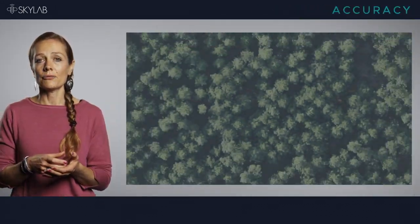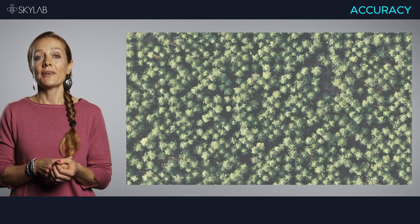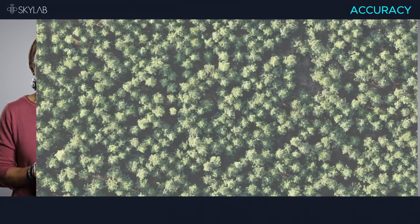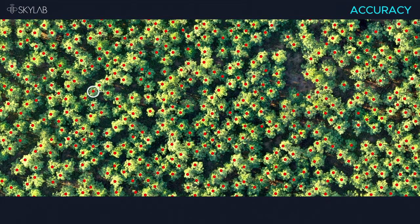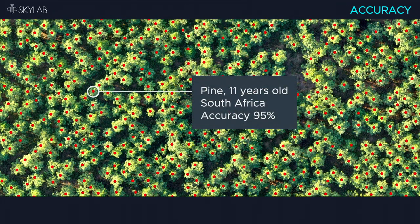Regarding accuracy, we have counted millions of trees for customers worldwide and usually achieve accuracies of around 95%. As is typical with AI, the more forest data that we get from a customer for each species, the more accurate and precise the model becomes.